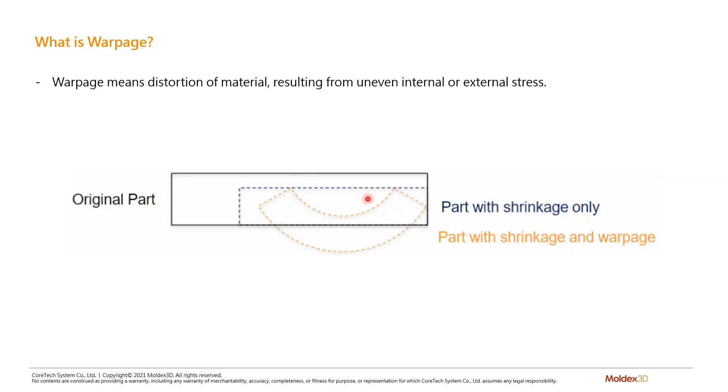What is warpage? Simply put, warpage means distortion of material resulting from uneven internal or external stress. The uneven stress will lead to differential shrinkage, and it causes warpage. If the plastic shrinks evenly, instead of warpage, we just call it shrinkage.